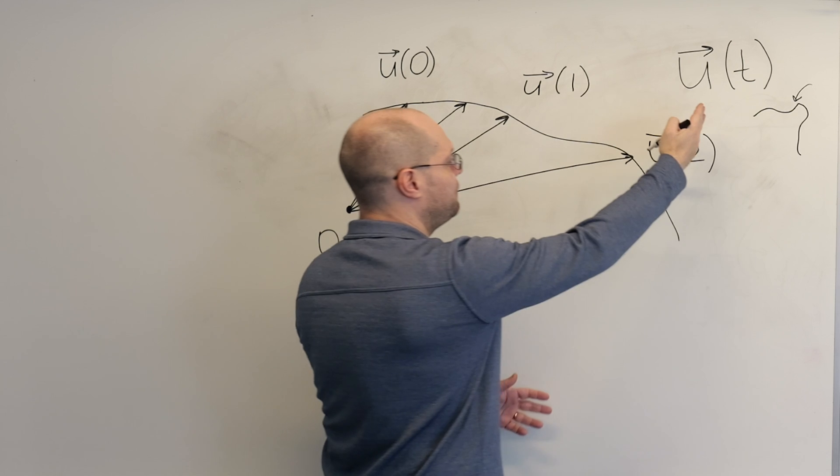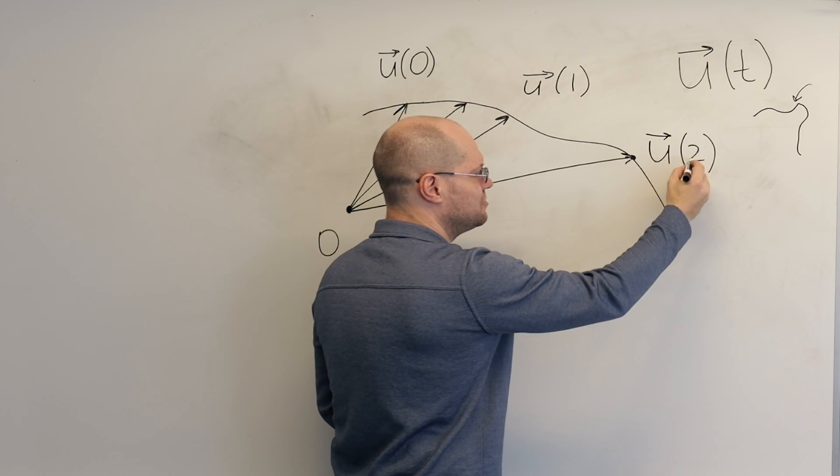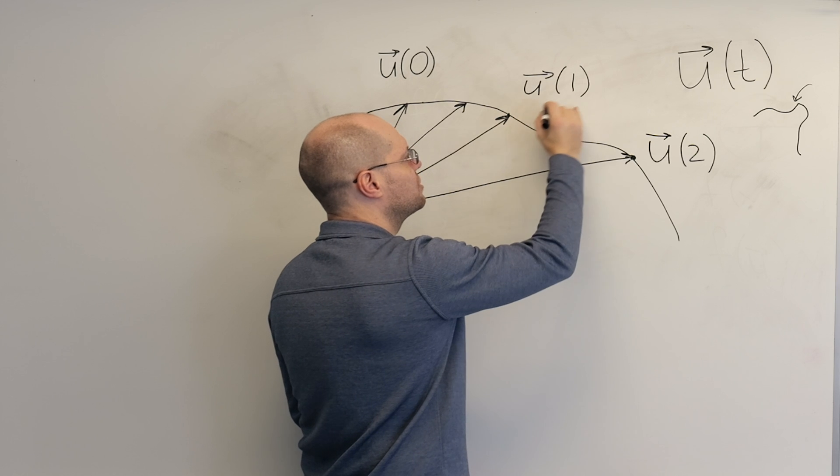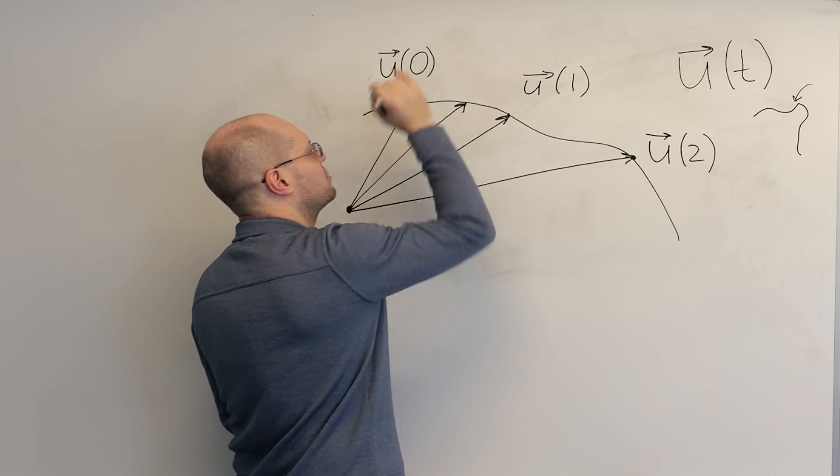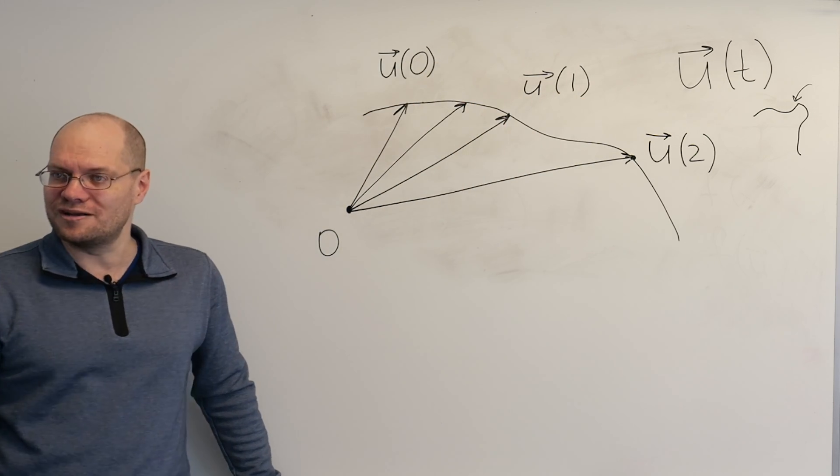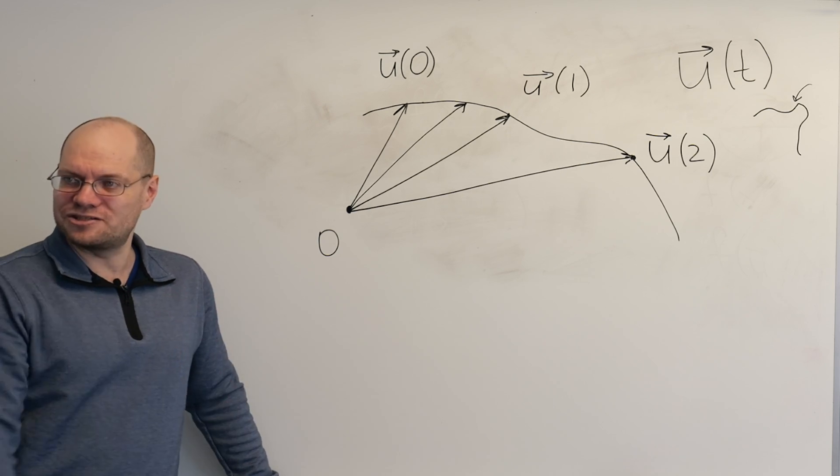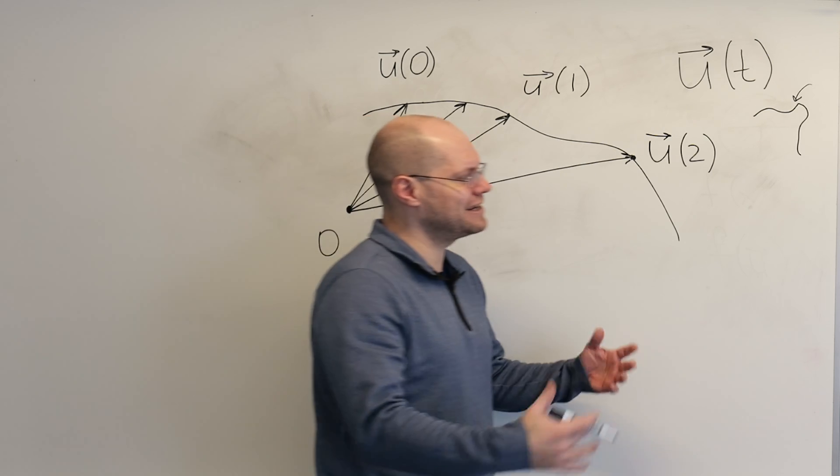And it's a curve that's automatically parametrized. Because when you start with a function, you already know that this point corresponds to T equals 2. And this point corresponds to T equals 1. And this point corresponds to T equals 0. And so on. So it's a parametrized curve. Automatically and naturally.